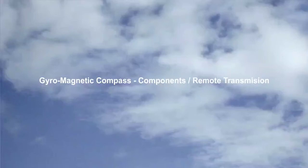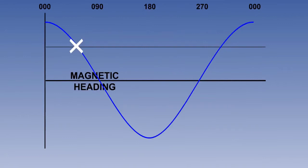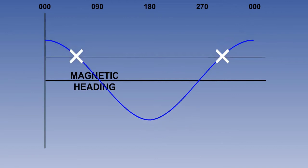This is the third of three lessons on the gyromagnetic compass. Previously, we have established the need for the gyromagnetic compass and showed the basic components which make up the system. We also showed how the detector unit, or flux valve, senses the Earth's magnetic field and reproduces it within the compass indicator.